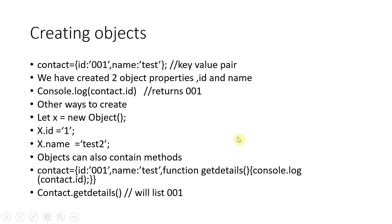The first simple way to create an object: say contact with ID colon value, name colon 'test' — we've created two object properties, ID and name. Accessing contact.ID returns that value. Another way: let x = new Object(), then x.ID = 1, x.name = 'test2'. Objects can also contain methods.